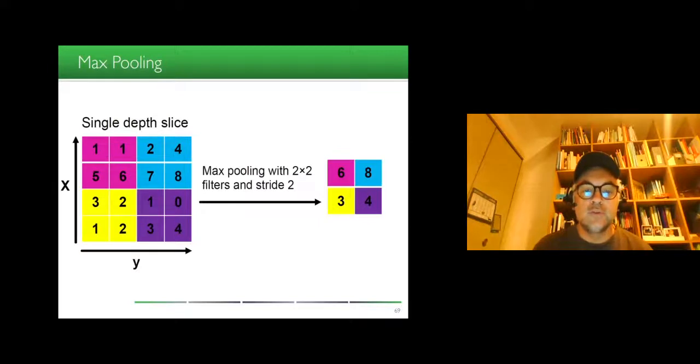There are different ways of doing this pooling, and a very common way is to take the maximum value. Here, in this small 2x2 matrix, 1, 1, 5, 6, you replace it by the 6, and so on. It's done with a stride of 2, meaning that you jump by 2 pixels here to reduce a 4x4 matrix into a 2x2 matrix.